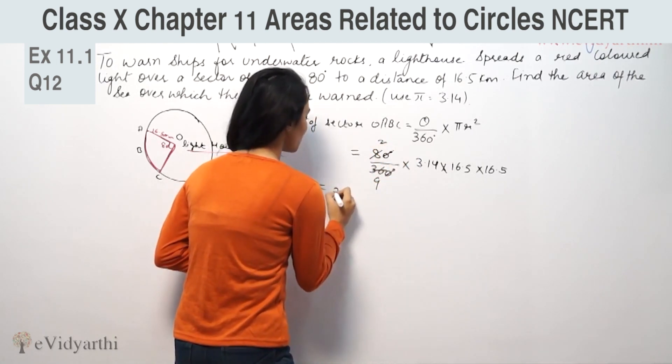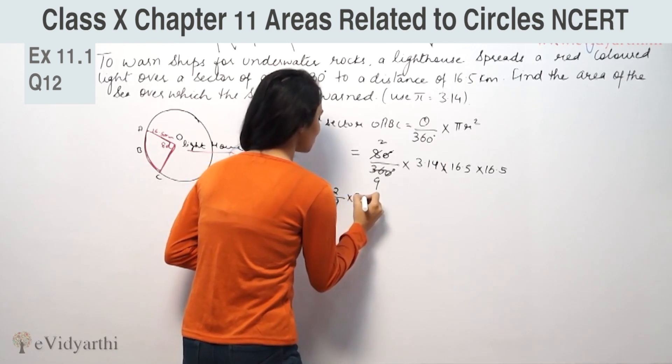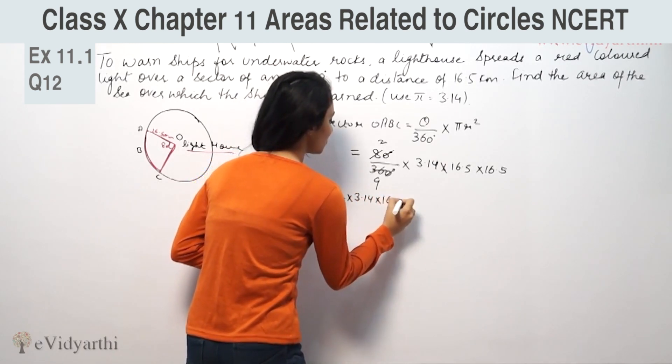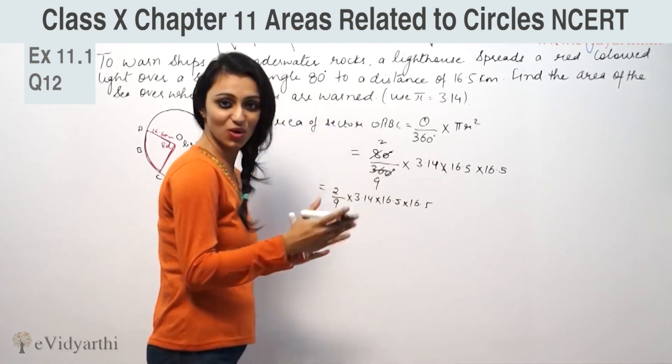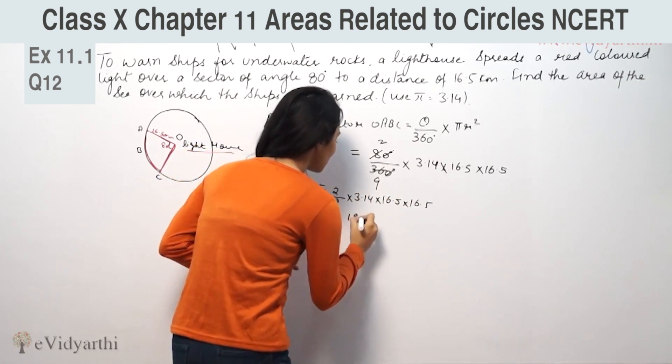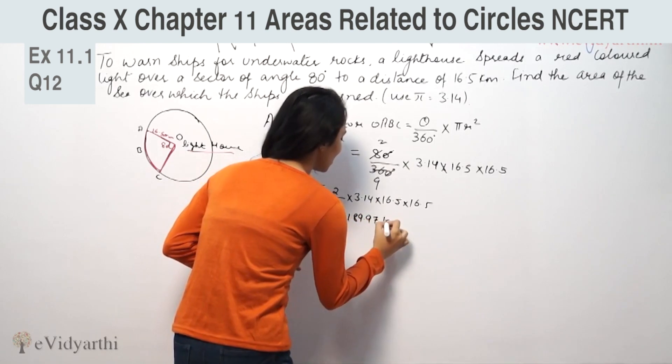So 2 by 9 into 3.14 into 16.5 into 16.5. When we solve these values, we get 189.97 km squared.